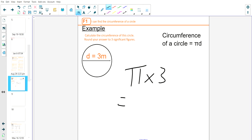My answer will be 9.4247 and it goes on. Now it's asking me to round my answer to three significant figures.